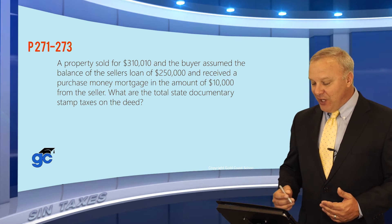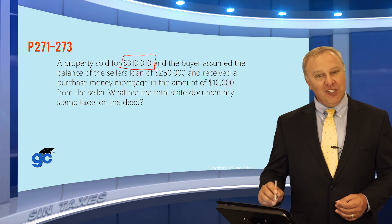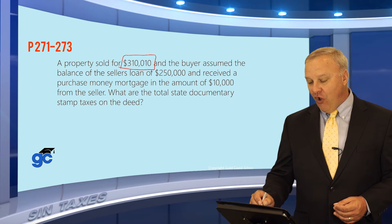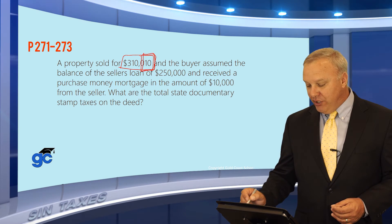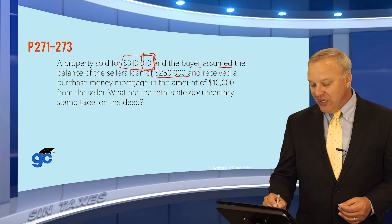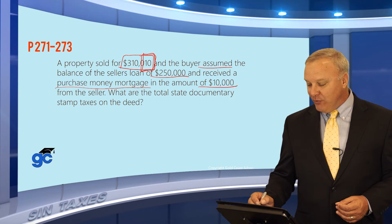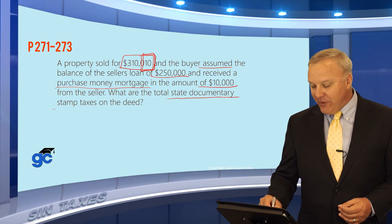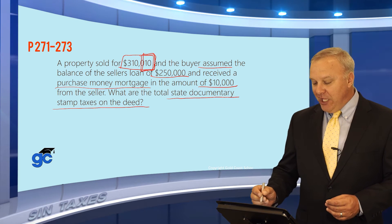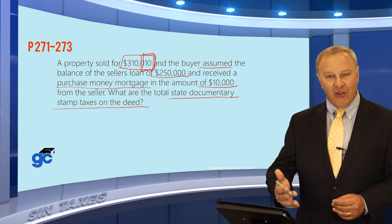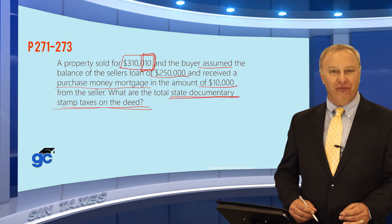The next question says a property sold for $310,010 — you rarely see prices like this outside of exam questions. Be very cautious with that extra $10, as that's where two answers come very close. The buyer assumed the seller's loan balance of $250,000 and received a purchase money mortgage of $10,000 from the seller. The question asks: what are the total state documentary stamp taxes on the deed? Even though they gave you info about the assumption and the new mortgage, you only need one calculation to answer this.